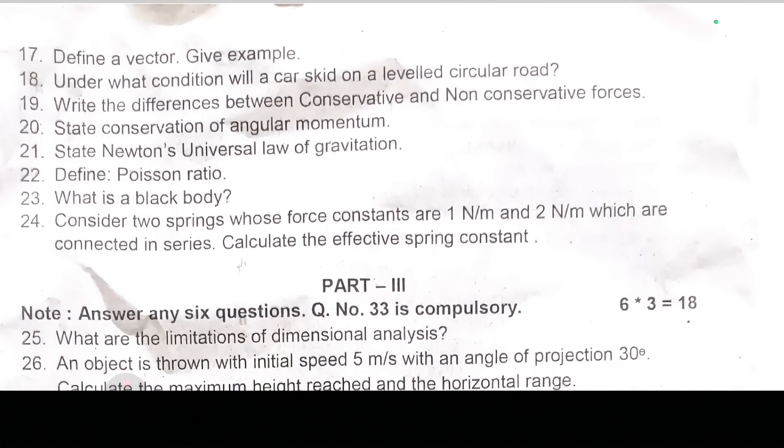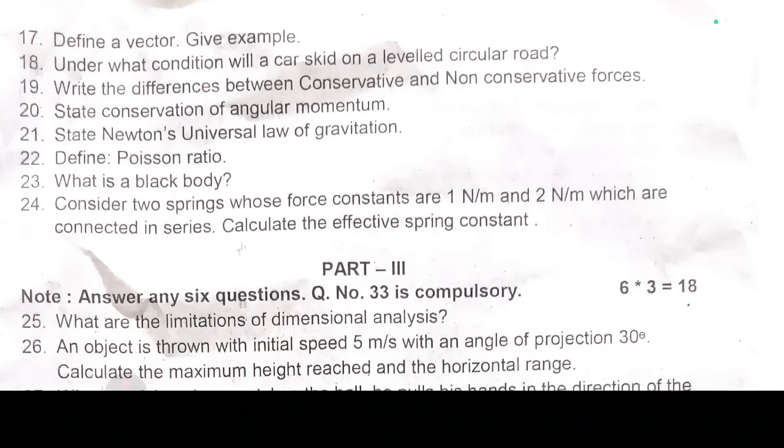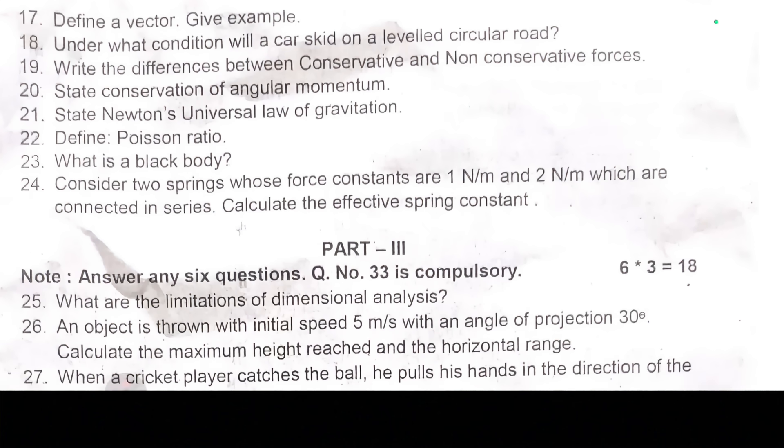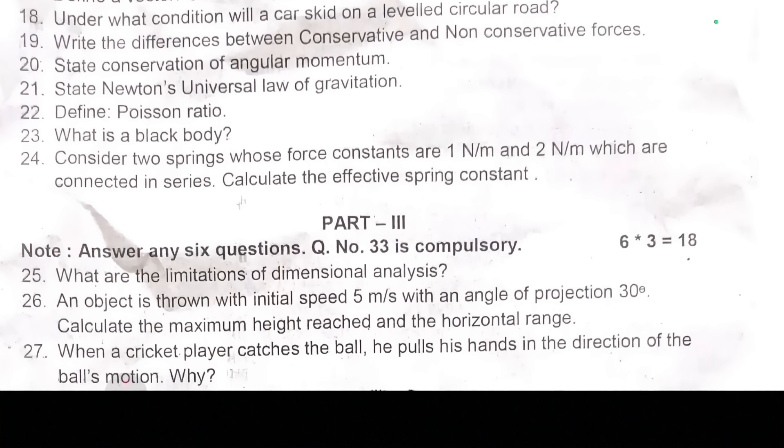Question number thirty-three is compulsory. Twenty-five, what are the limitations of dimensional analysis? Most repetitive and important frequent question. Twenty-six, an object is thrown with initial speed five meters per second with an angle of projection 30 degree. Calculate the maximum height reached and the horizontal range.